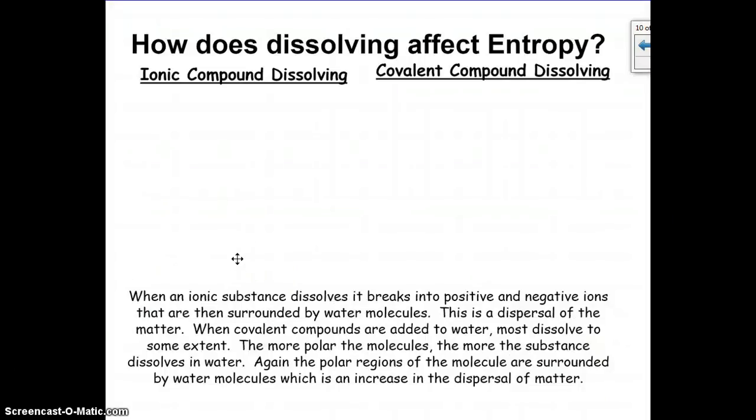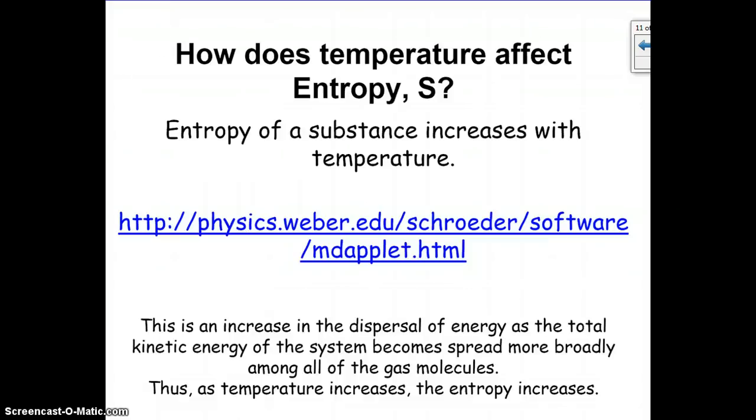However, when you're thinking about covalent versus ionic, dissolving an ionic compound is going to provide you a lot bigger increase in entropy than dissolving a covalent compound, just because of the fact that the ionic will break into component ions and the covalent won't. So ionic is going to have a larger dispersal, so more randomness, larger increase in entropy.